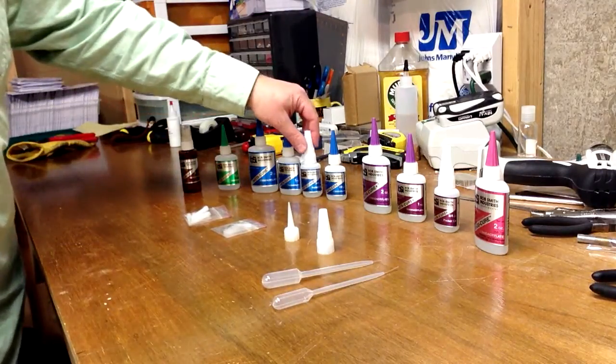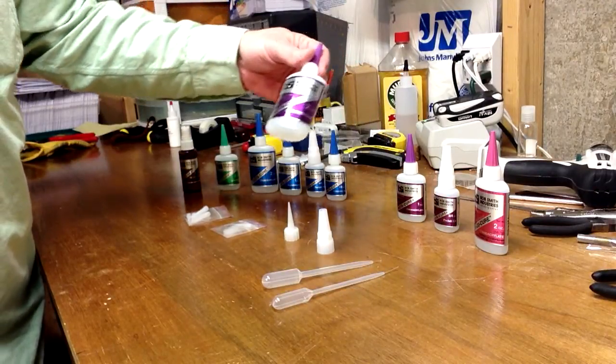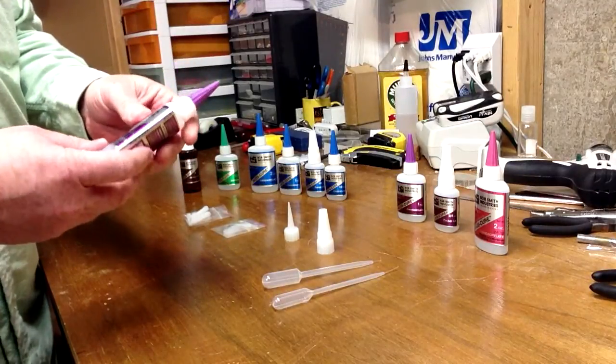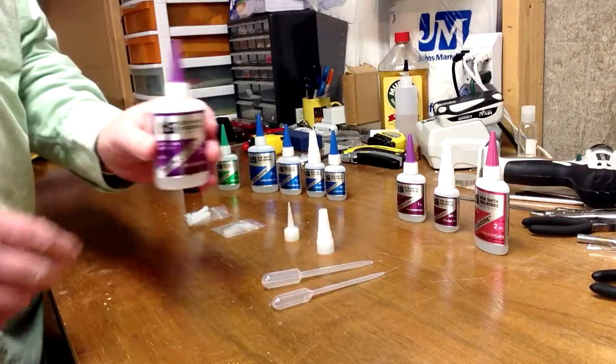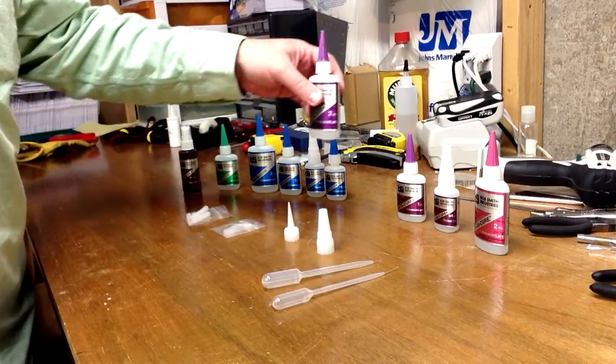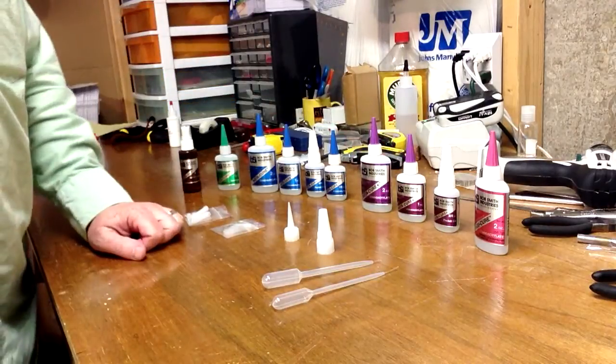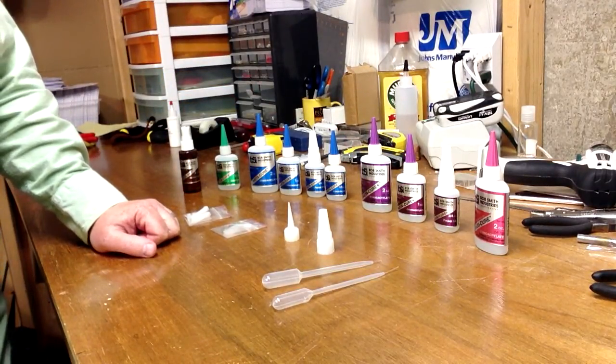All right, so now moving on to the medium viscosity of the CA glue. This is a little bit thicker. We call it the gap filling because it's thicker than the thin version and is good for maybe things such as gluing a broken key stick, re-gluing jack flanges, things like that.